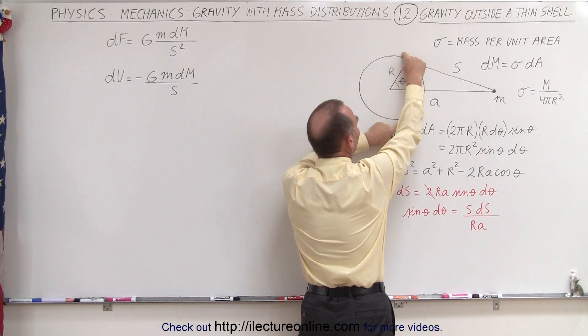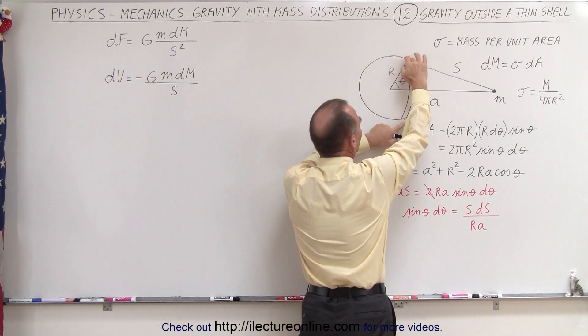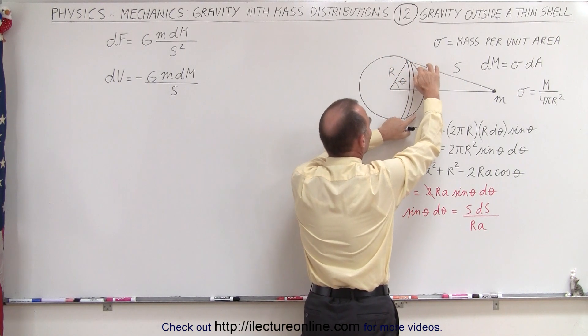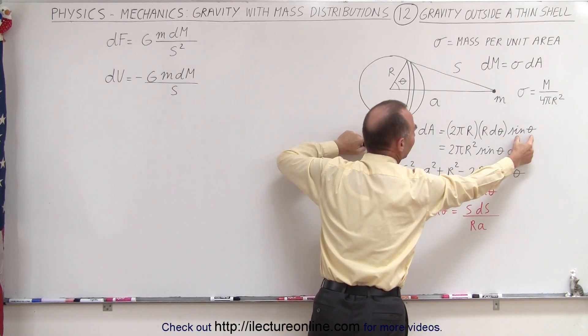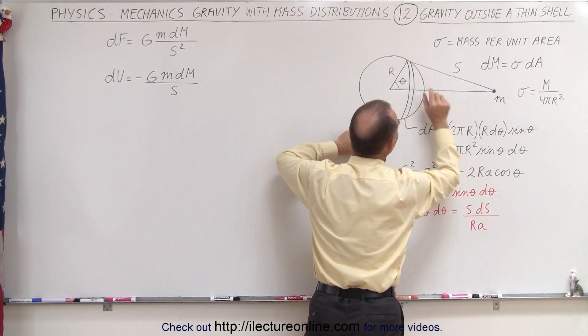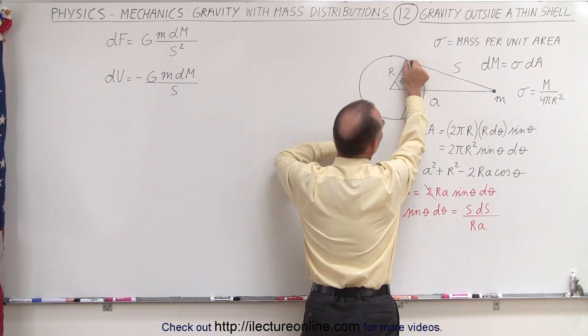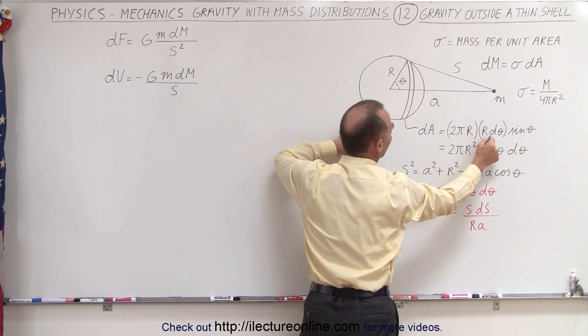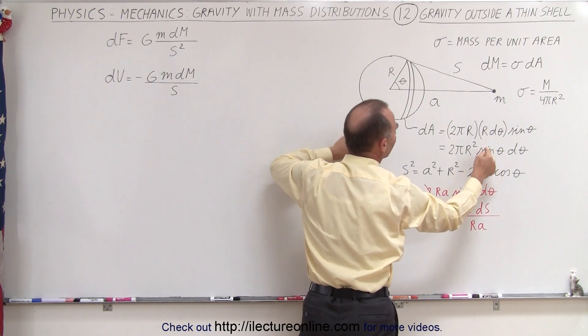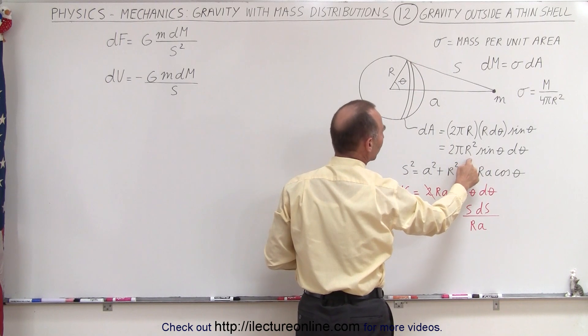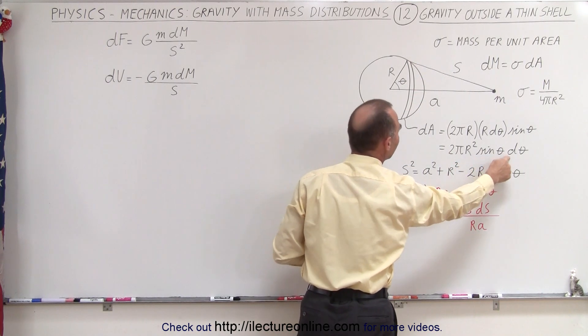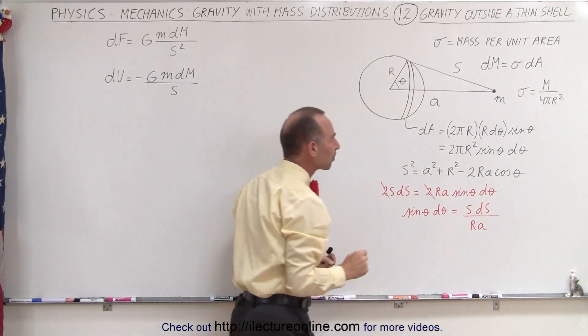We need to account for the fact that the strips get smaller and smaller toward the edge, so we need the sine of θ for that. Then we need the thickness of each strip, which is r dθ. So dA is equal to 2πr² sinθ dθ.